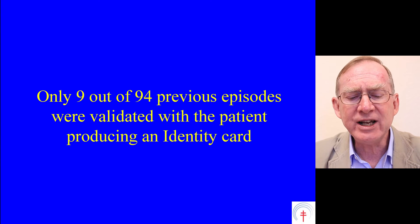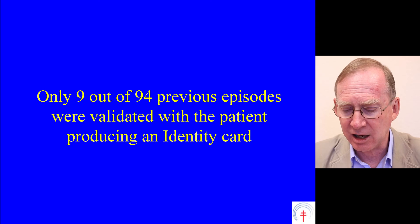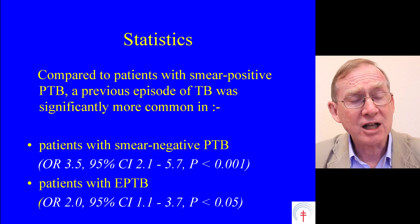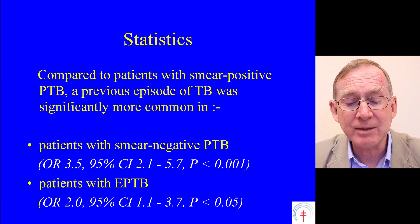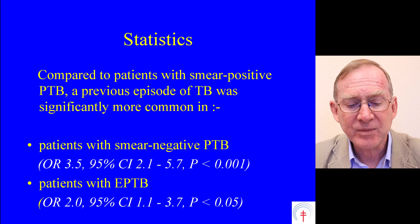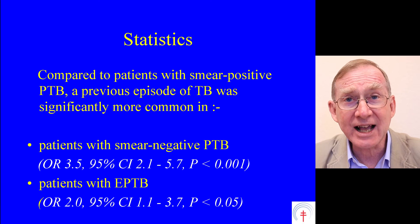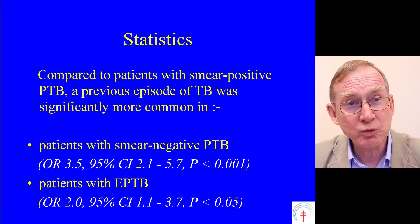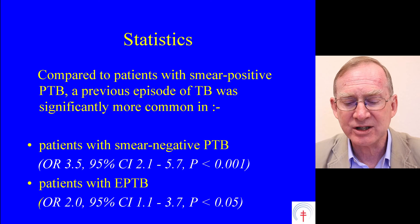Next paragraph: 'Only 9 out of 94 previous episodes were validated with the patient producing an identity card.' And finally, the last paragraph with some statistics: 'Compared to patients with smear positive pulmonary TB, a previous episode of TB was significantly more common in patients with smear negative PTB — odds ratio 3.5, 95% confidence interval 2.1 to 5.7, p less than 0.001 — and patients with extra pulmonary TB — odds ratio 2.0, 95% confidence interval 1.1 to 3.7, p less than 0.05.'